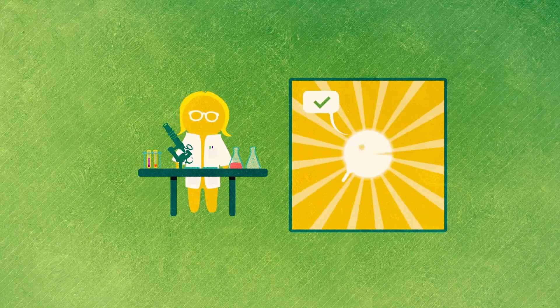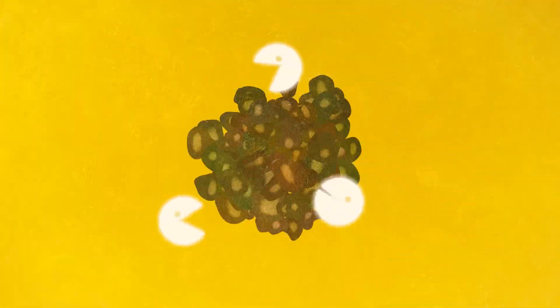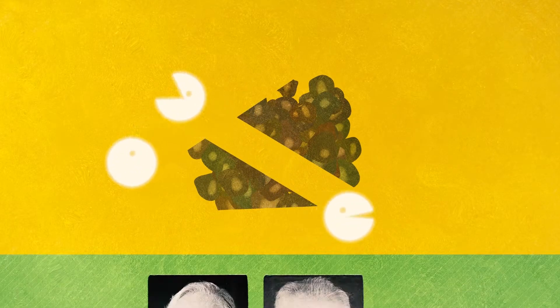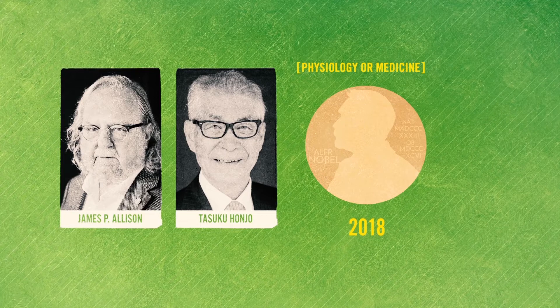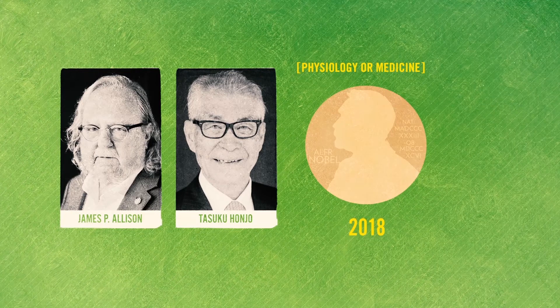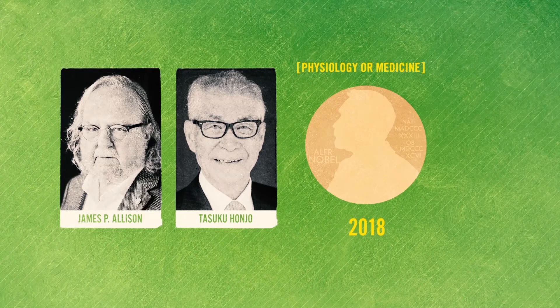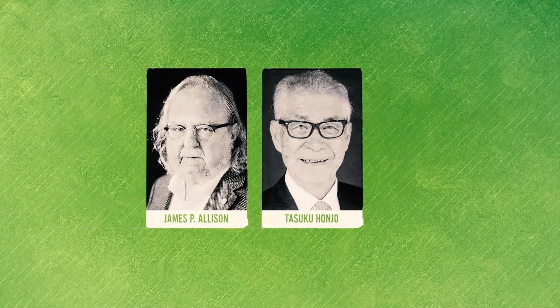Targeted disabling of the immune response suppression such that the body starts attacking the cancerous cells again is one method. For their findings in this area, immunologists James P. Allison and Tasuko Honjo were awarded the Nobel Prize for Physiology or Medicine in 2018.